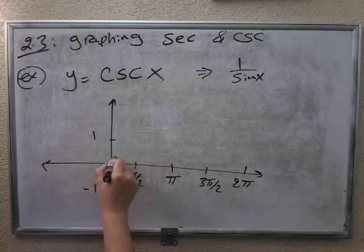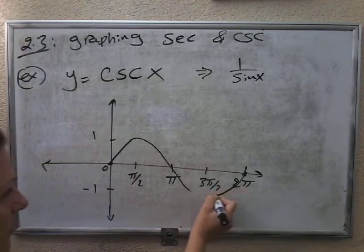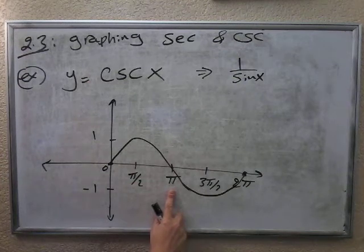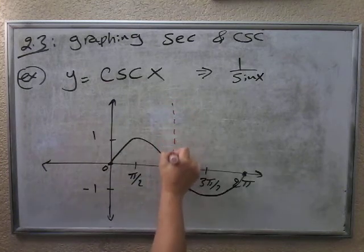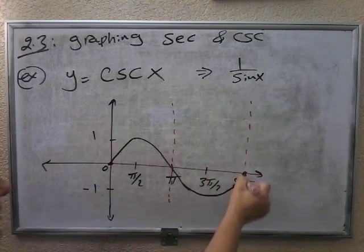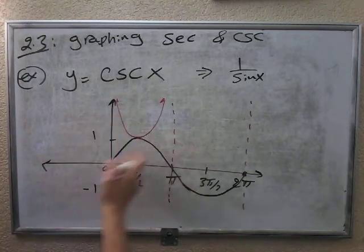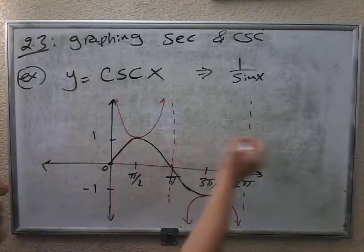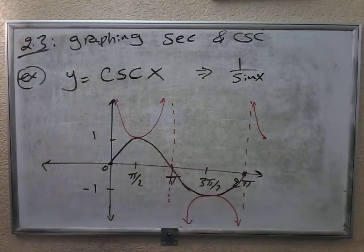The sine graph starts from 0, goes up, goes down to negative 1, and goes back up. At the intercept points — where sine equals 0 — if I try 1 over sine of pi, sine of pi is 0, so 1 over that is undefined. That means there's a vertical asymptote at that point. The cosecant function will be touching the sine graph between the asymptotes, and that's how the graph of cosecant looks.